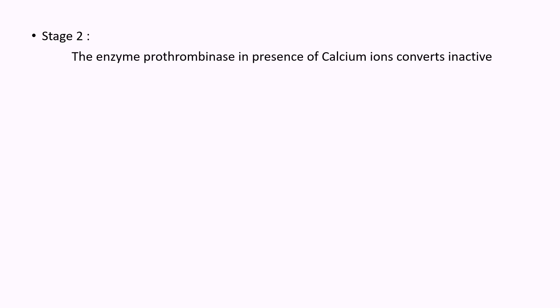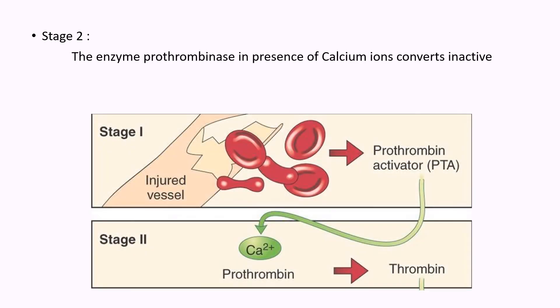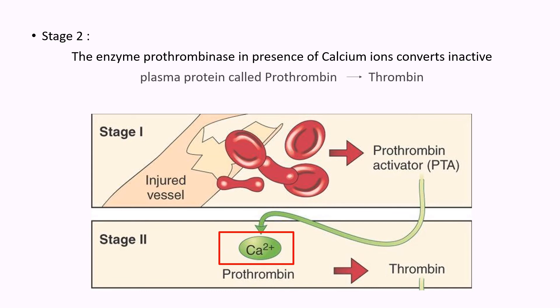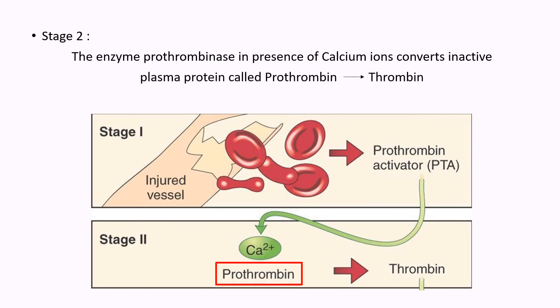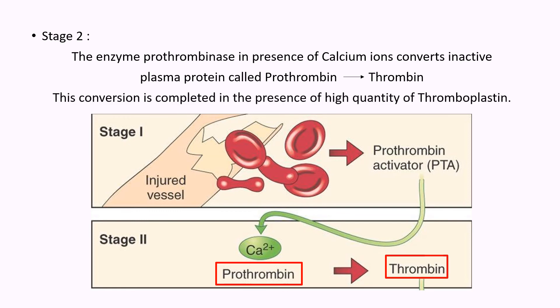During the second stage, the enzyme prothrombinus, in presence of calcium ions, converts inactive plasma protein called prothrombin into thrombin. This conversion is completed in the presence of high quantity of thromboplastin.